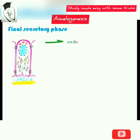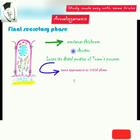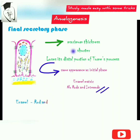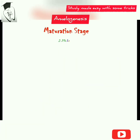In the final secretory stage, once the ameloblasts reach maximum thickness, they become shorter and lose the distal portion of Tomes' process, giving them the same appearance as the initial phase. The enamel matrix laid in this phase has no rods or interrods. Overall, the enamel is composed of a rod and interrod layer sandwiched between a thin rodless initial layer and a thin rodless final layer.